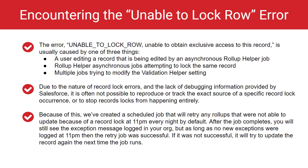The error 'unable to lock row — unable to obtain exclusive access to this record' is usually caused by one of three things: a user editing a record that is being edited by an asynchronous Roll-Up Helper job; Roll-Up Helper asynchronous jobs attempting to lock the same record; or multiple jobs trying to modify the validation helper setting.